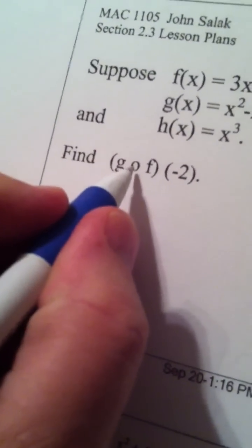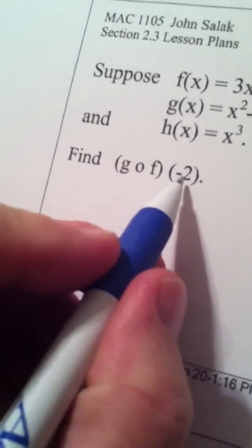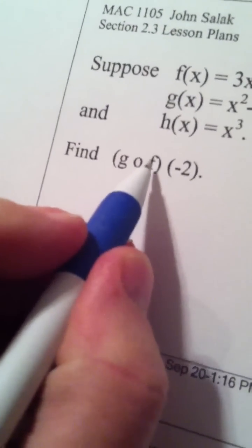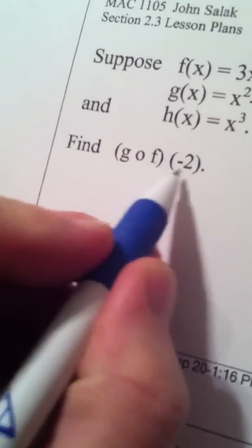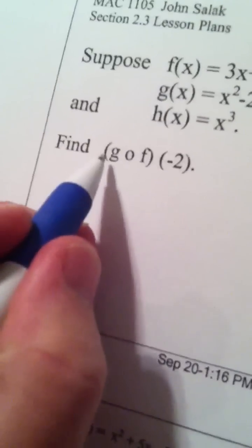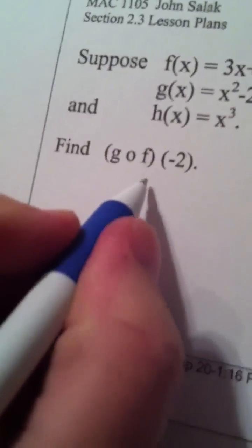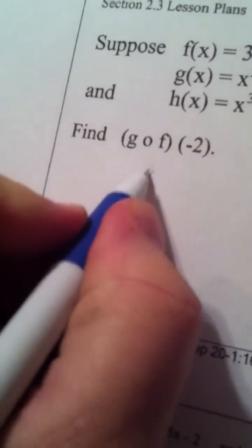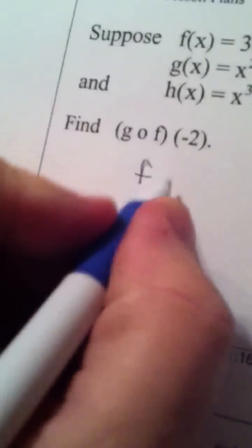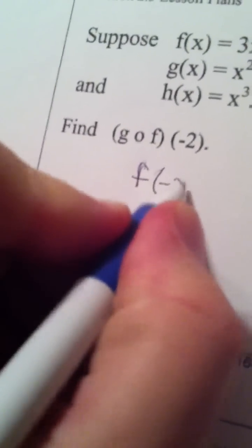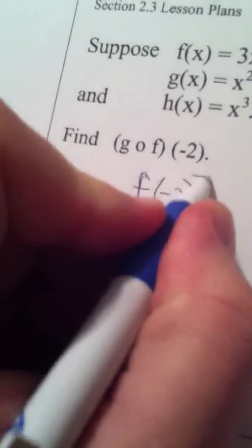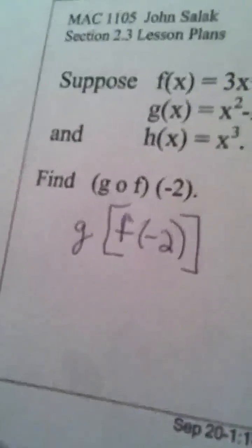Now, when you're doing the operation of composition, negative 2 is first going to get put into function f, and then that answer is going to get put into g. That's the way composition is defined. So we're going to find f of negative 2 first, and then that answer is going to get put into g.